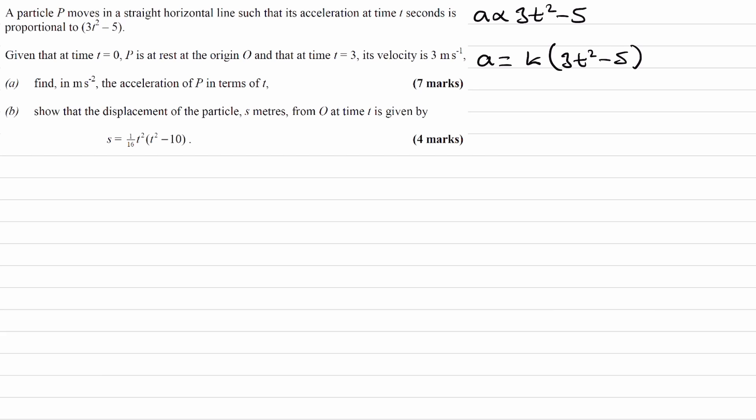And then in the next sentence we're told that, given that at time t is equal to 0, p is at rest, so the velocity is 0. It's at the origin as well to start with, so that means that the displacement from the origin is 0 to begin with. And we're also told that when t is equal to 3, the velocity is 3. So t is 3, v is 3.